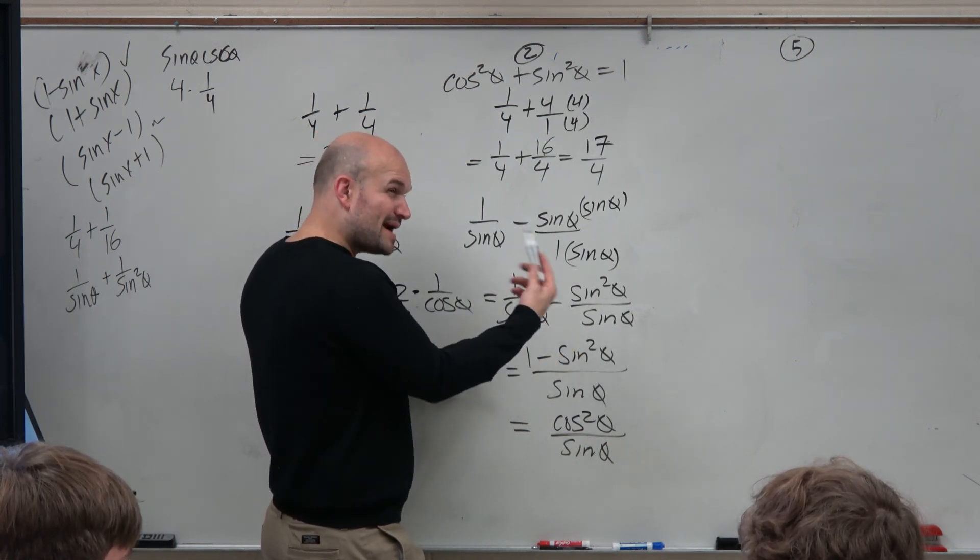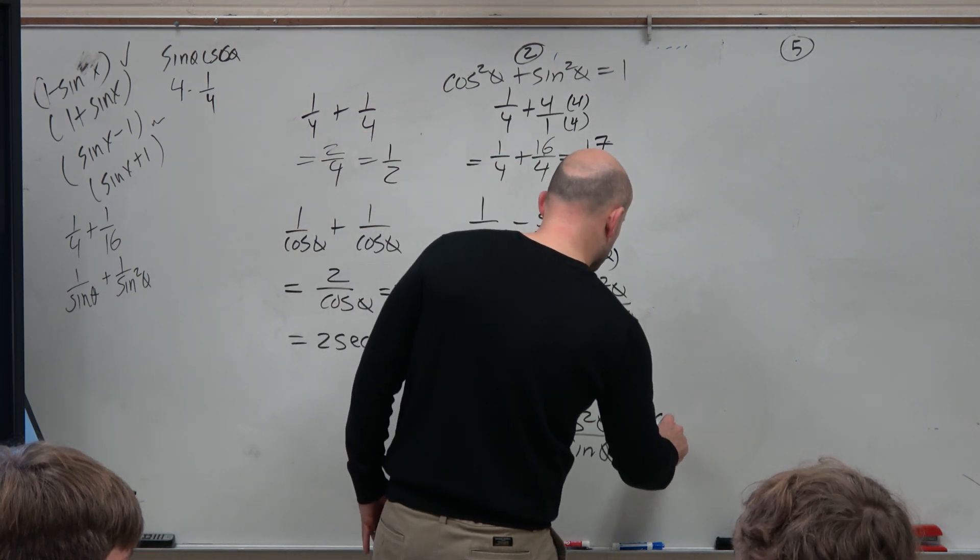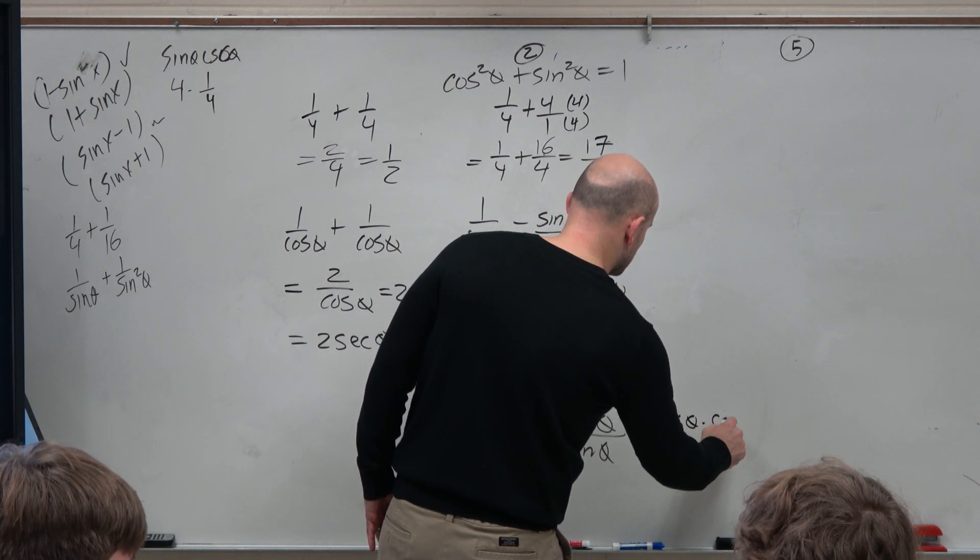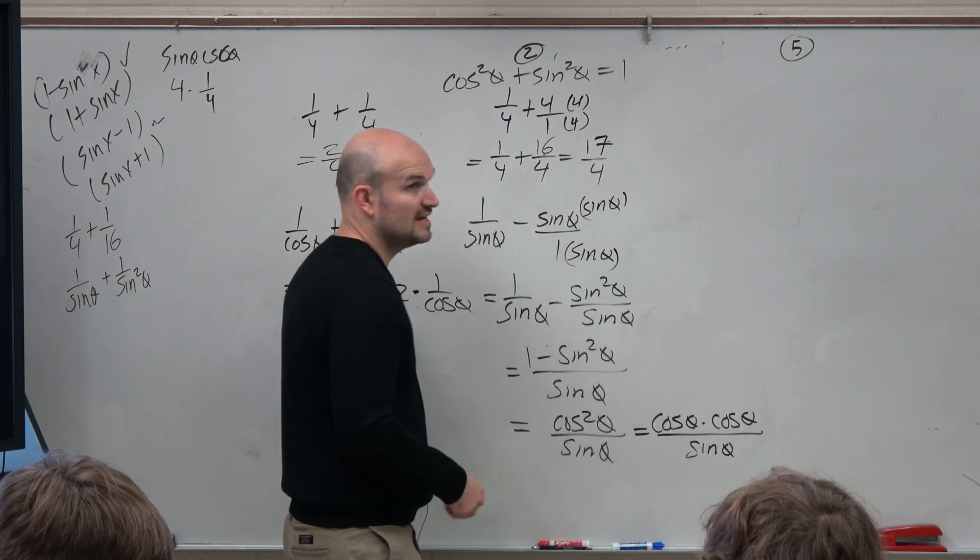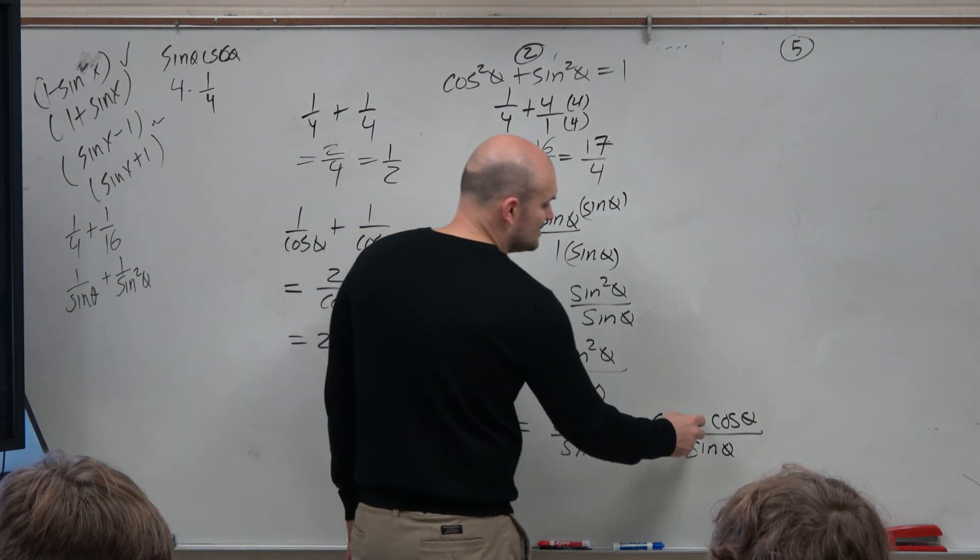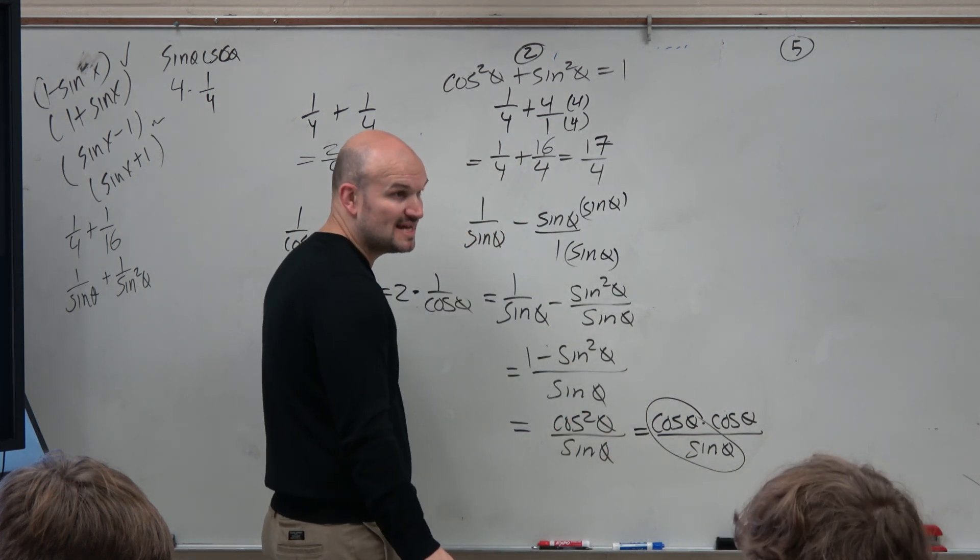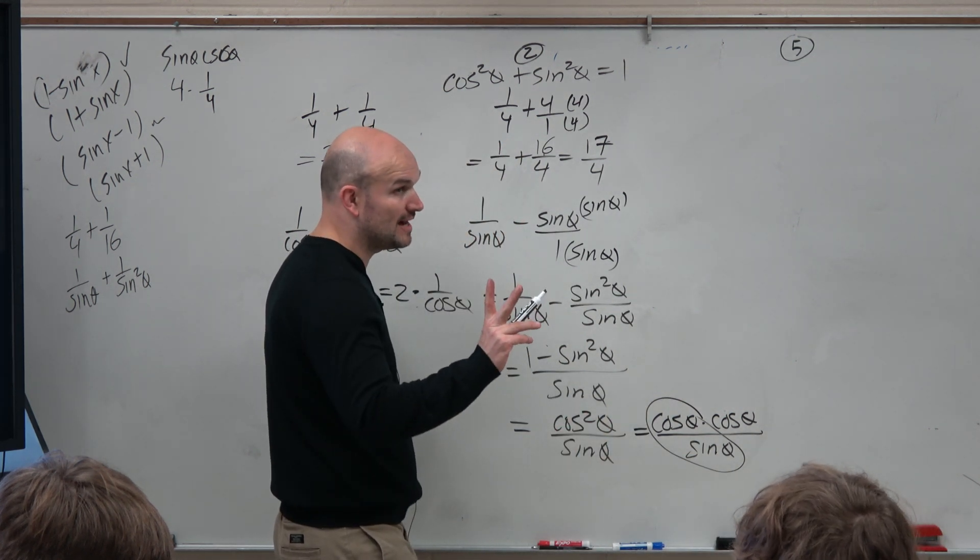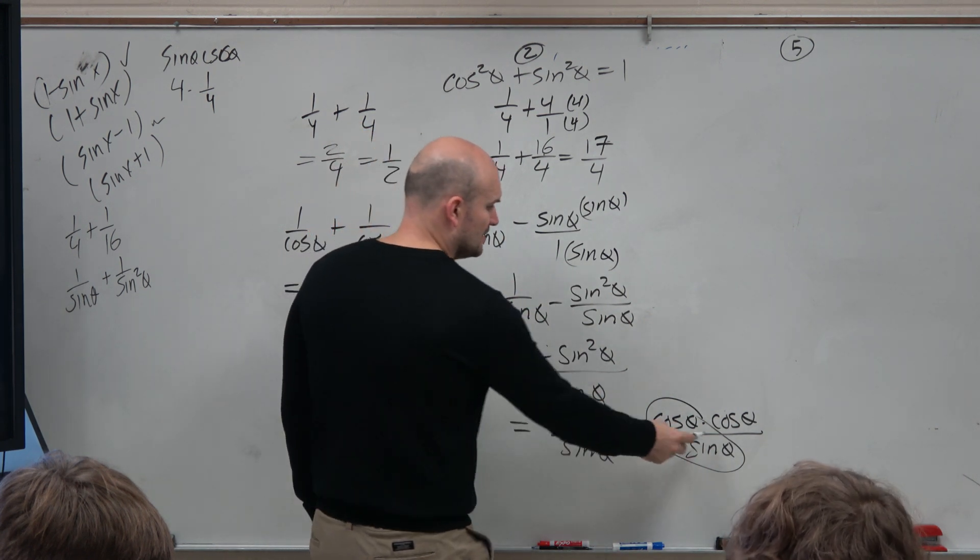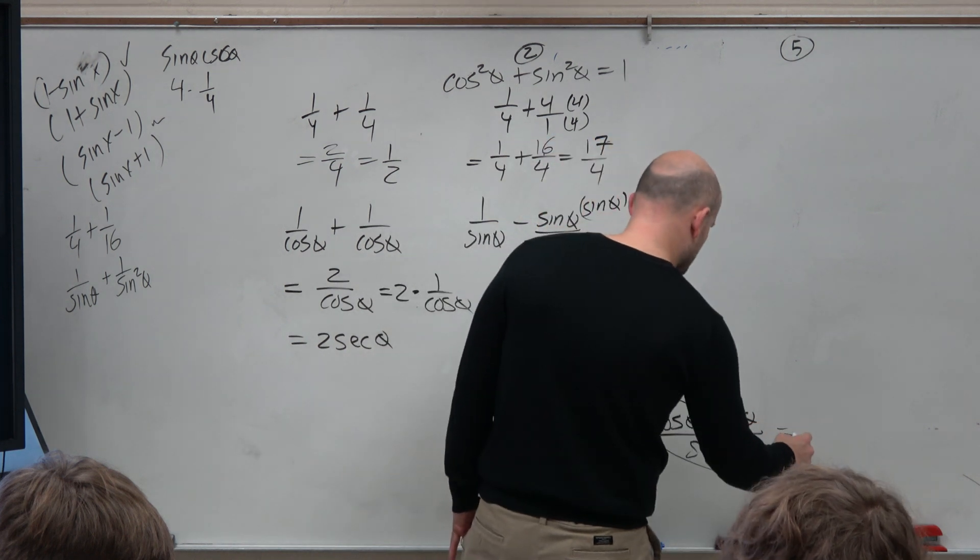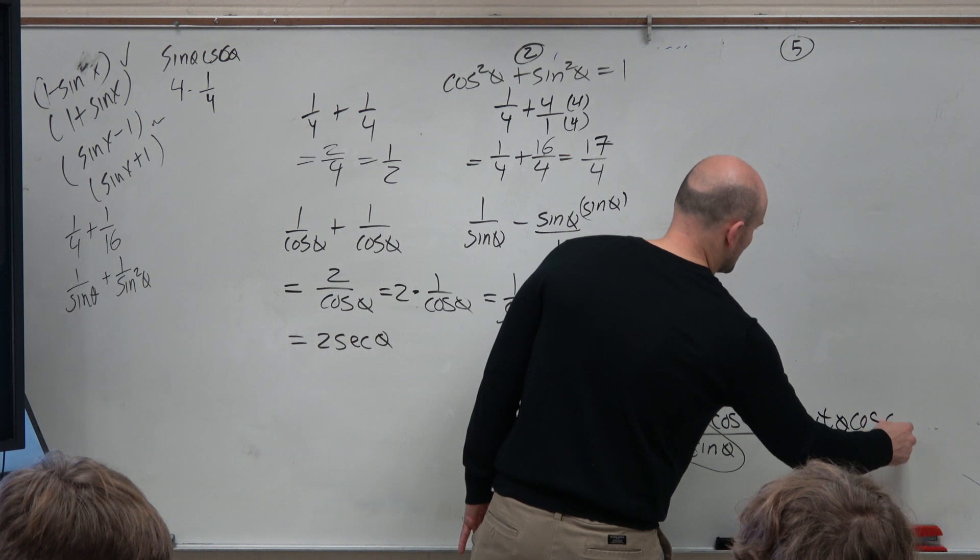However, if we're practicing simplifying, we could change this to cosine squared. And technically, we could also change this to cosine of theta times the cosine of theta all over the sine of theta. And since everything's separated by multiplication, technically we could group the sine with one of them. Don't do both of them, because sine is not divided into both of them. It only divides into one of them, technically. So therefore, we could actually rearrange this to cosine over sine is cotangent of theta times cosine of theta.